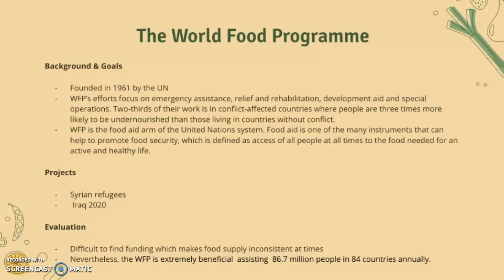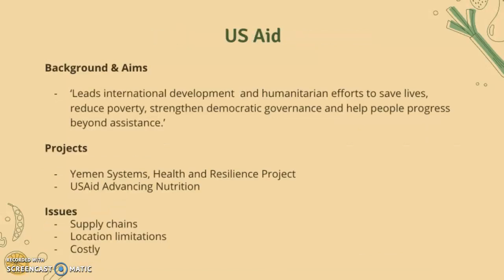Projects include Syrian refugees in Iraq in 2020. In terms of evaluation, it can be difficult to find funding and to make food supply consistent. Nevertheless, they are extremely beneficial in assisting 86.7 million people in 84 countries annually.